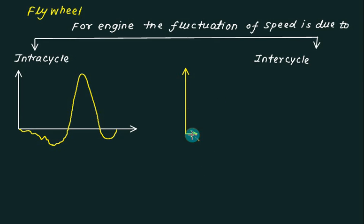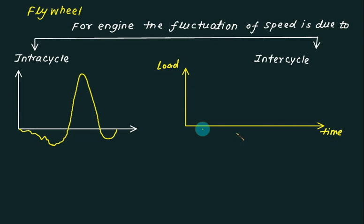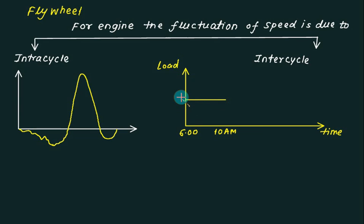If you are operating a power plant throughout the day and your load is changing with respect to time, we have a load cycle from 6 a.m. to 10 a.m. where the load is low. From 10 a.m. onwards up to around 6 p.m. or 9 p.m., the load is at peak.